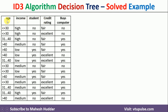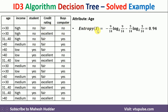I will start with the first attribute, age. First, we need to calculate the entropy of the whole dataset — entropy of S. We have 9 yes examples and 5 no examples. So entropy of S is equal to minus 9/14 log(9/14) base 2, minus 5/14 log(5/14) base 2. Once you solve this equation, you get 0.94 as the entropy.